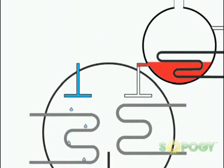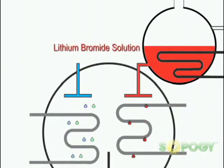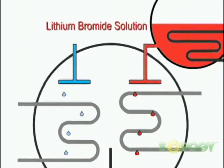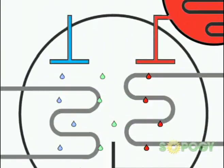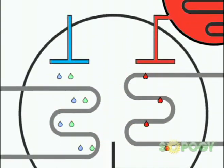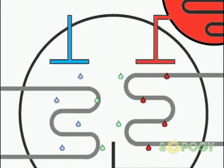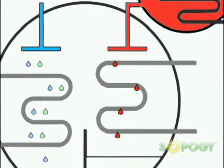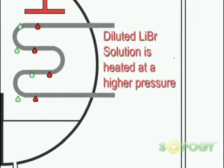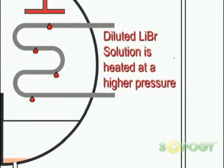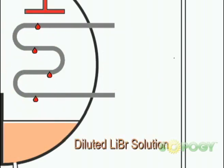Lithium bromide solution, which acts as the absorbent, is used to absorb the vaporized refrigerant. The evaporation of the refrigerant takes place at a low pressure. The diluted solution, which contains the absorbed refrigerant vapor, is heated at a higher pressure. As lithium bromide becomes dilute, it loses its capacity to absorb water vapor.